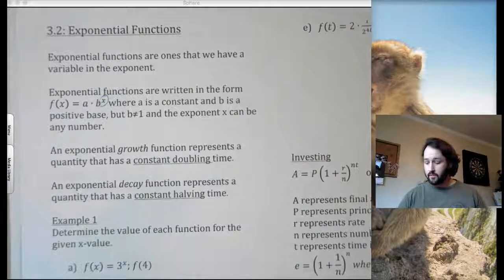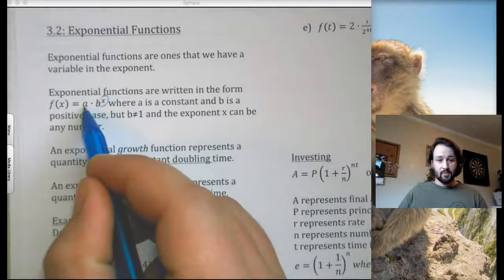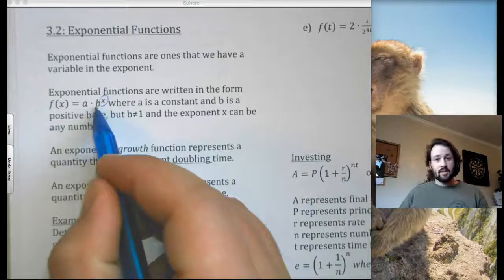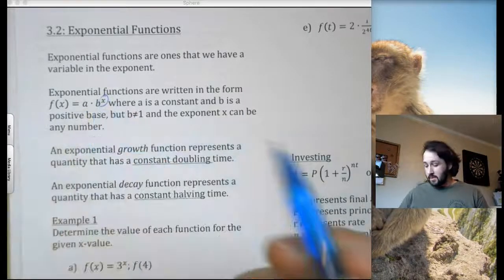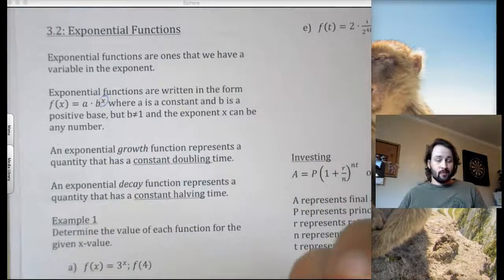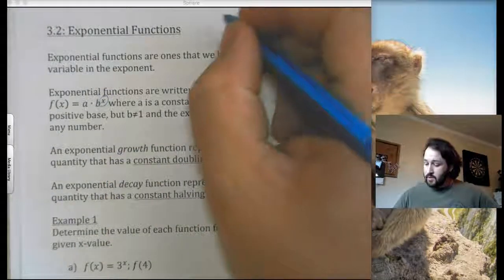Exponential functions are essentially functions that have a variable in the exponent. That's all that we are really looking for. A can be any real number, positive or negative, doesn't matter. B needs to be a positive number. That's what the apex says. But it cannot be 1, otherwise you're not really changing anything at all.